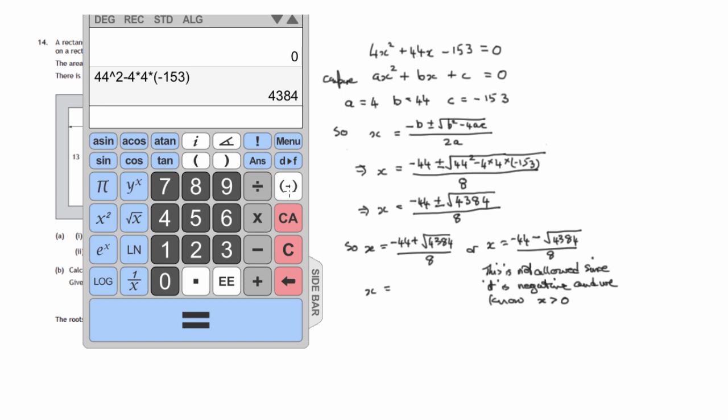So, let's work out that value. So, negative 44 plus the square root of 4384. We'll work out that first. That comes to 22 and a bit. And if we divide it by 8, we're then getting 2.776 and so on.